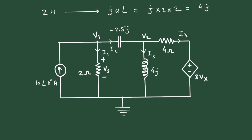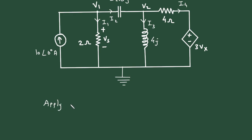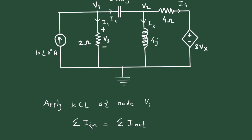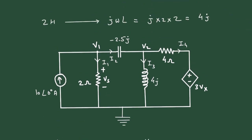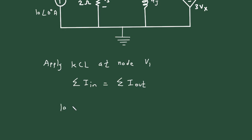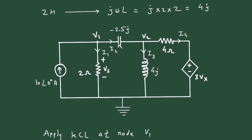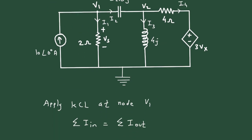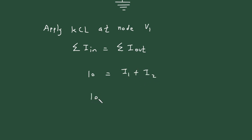At node V1, we will apply KCL — Kirchhoff's Current Law. According to KCL, the summation of all currents entering a node equals the summation of all currents leaving the node. At this node, the entering current is 10∠0°, which we can simply write as 10. So 10 equals the leaving currents I1 plus I2.